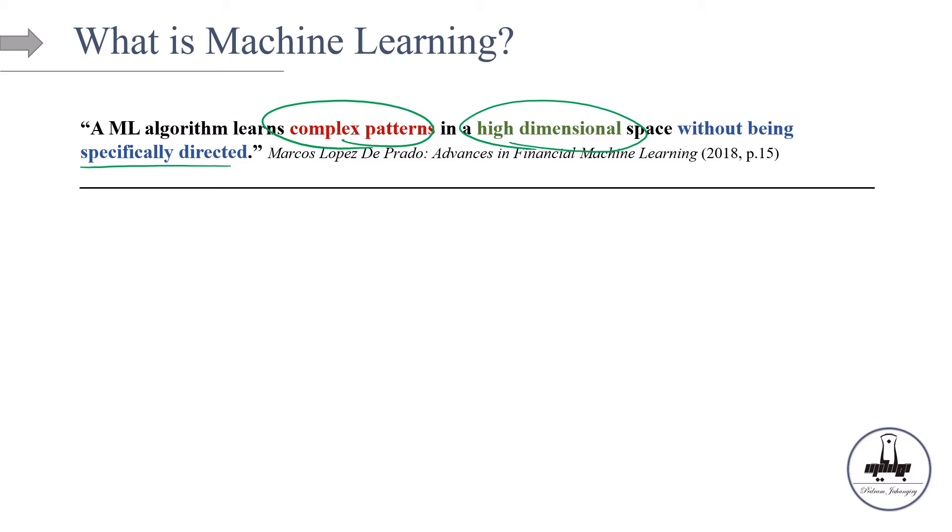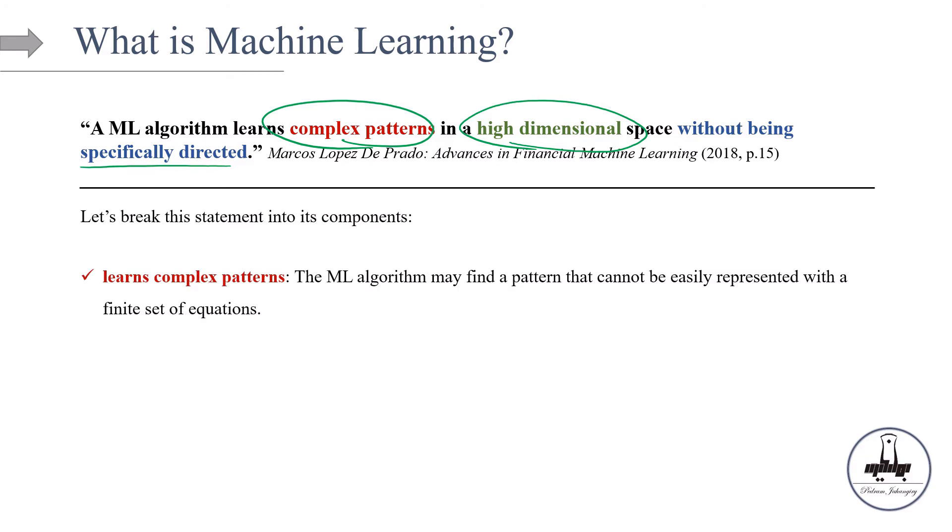Let's break down this definition into its components. First, we say the machine learns complex patterns. The ML algorithm may find a pattern that cannot be easily represented with a finite set of equations. Maybe the pattern is not necessarily linear or even nonlinear; maybe there's a hierarchical pattern in the data. These are complex patterns that need to be learned.